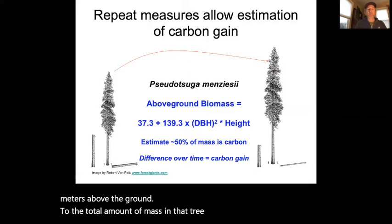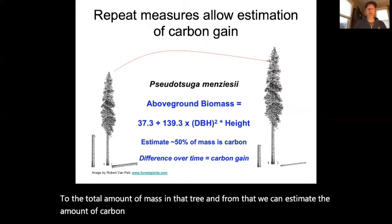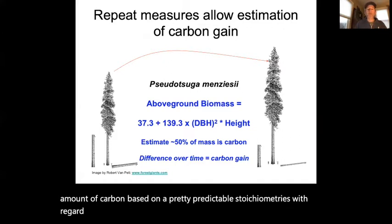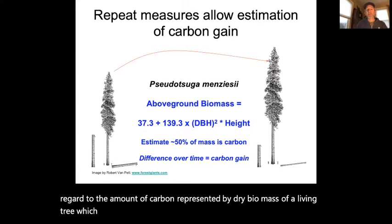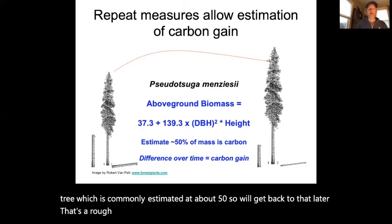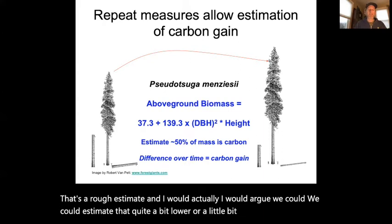From tree mass we can estimate the amount of carbon based on a predictable stoichiometry: the carbon represented by dry biomass of a living tree is commonly estimated at about 50 percent. That's a rough estimate, and one could argue it could be estimated a little bit lower.